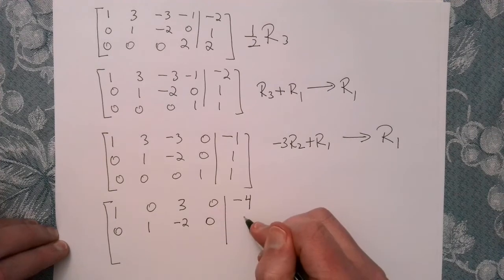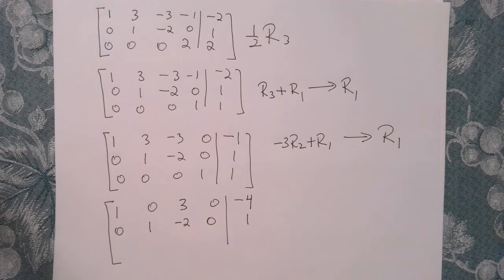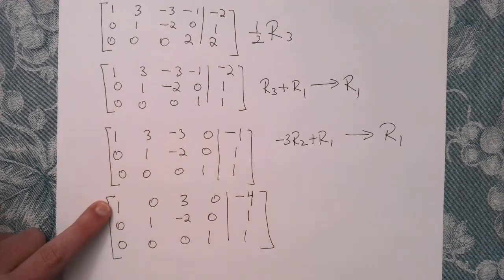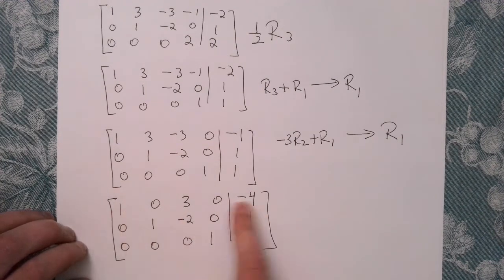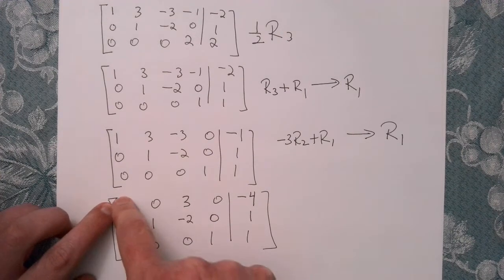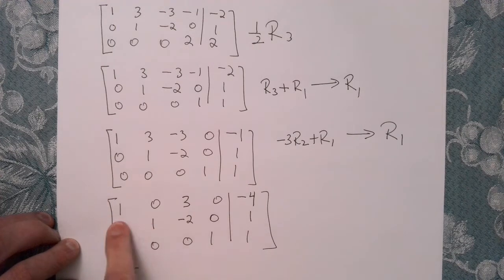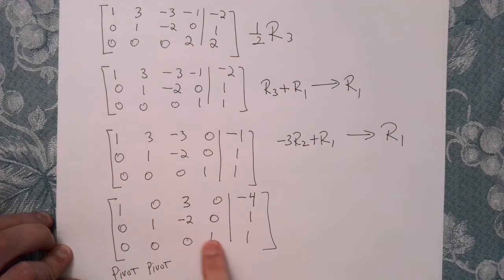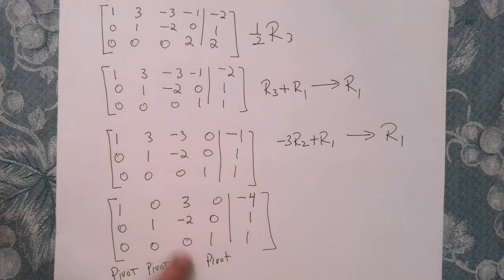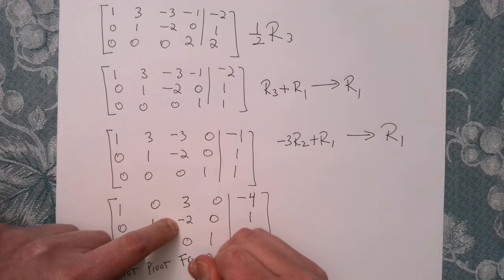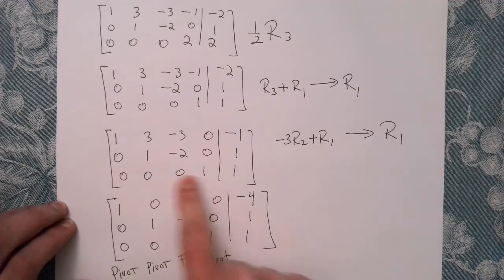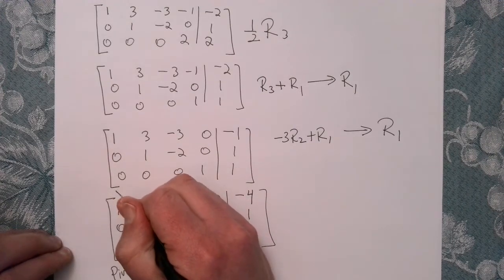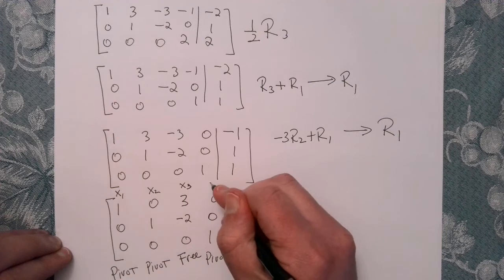Our matrix is now in reduced row echelon form. We can identify which columns are pivot columns and which correspond to free variables. The leading 1 in each row corresponds to a pivot column — so we have three pivot columns. The remaining column has no pivot, so it corresponds to a free variable. Labeling the variables as x1, x2, x3, x4, we find that x3 is free.